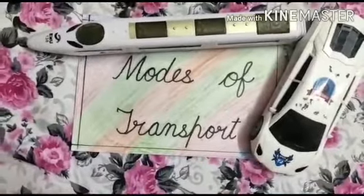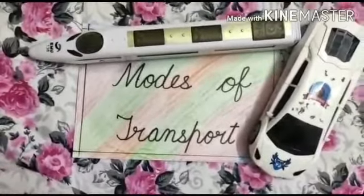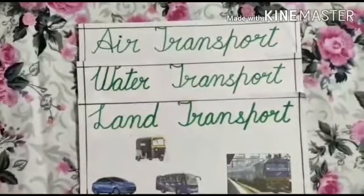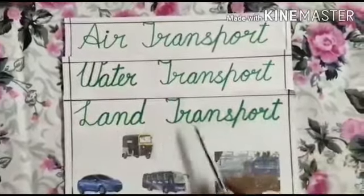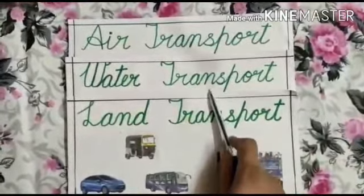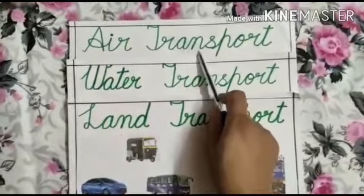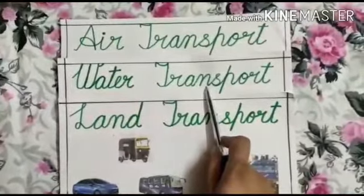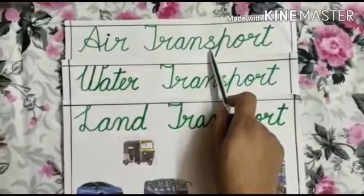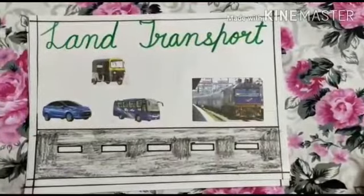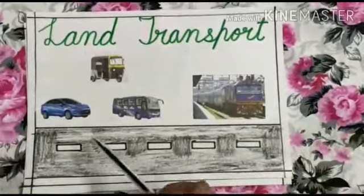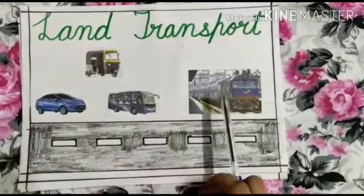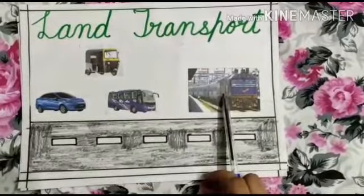Now I am going to tell you about different types of modes of transport. There are three types of modes of transport: land transport, water transport, and air transport. Firstly, I am telling you about land transport. Car, auto rickshaw, bus, and train are land transport.